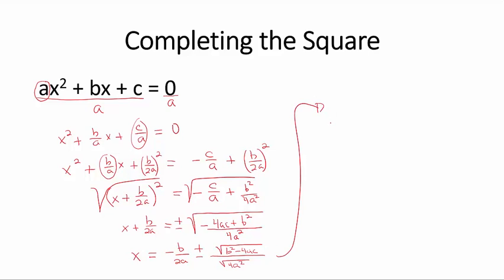Now, we have that x is equal to -b/2a plus or minus the square root of b² - 4ac over the square root of 4a², which is just 2a.